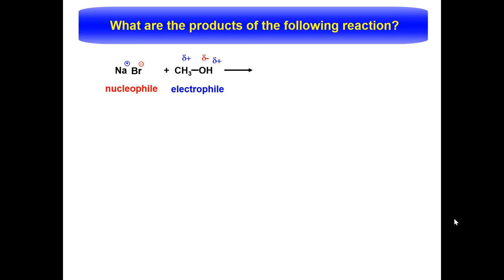The bromide ion is the nucleophile, since it has lone pairs to donate, and the electrophile would be methanol. The electrophilic center is the carbon with the partial positive charge.